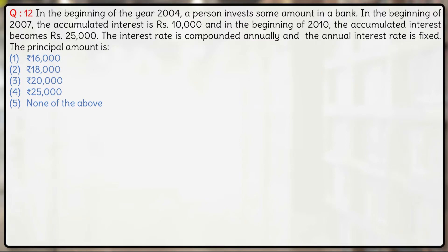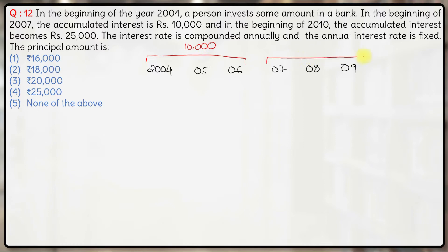If you solve this using normal equations it will become very tedious, so let's use a shortcut approach. The person starts investing in 2004, so interest runs for 2004, 2005, 2006 — that's the first three years. The accumulated interest for the first three years is ₹10,000. The total accumulated interest for six years is ₹25,000, so the interest for the next three years (2007–2009) is ₹25,000 minus ₹10,000, which is ₹15,000.